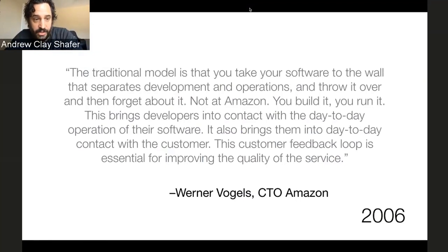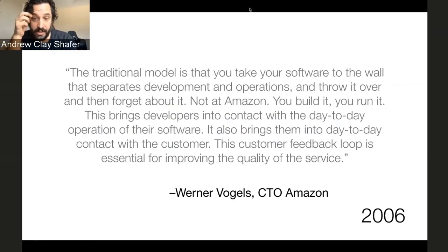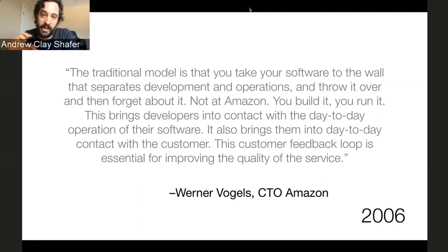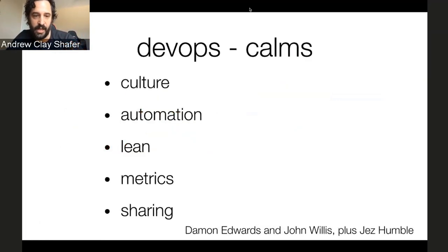This is a pretty famous 2006 interview. Werner Vogels: 'The traditional model is that you take your software to the wall that separates development and operations and throw it over and forget about it. Not at Amazon. You build it, you run it. This brings developers into contact with the day-to-day operation of their software. It also brings them into day-to-day contact with the customer. This customer feedback loop is essential for improving quality of service.' This is three years before 'DevOps' was even a word.